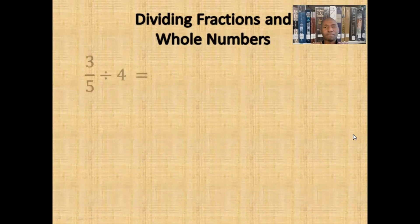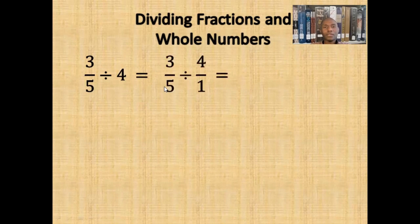Now, let's try some more problems. Suppose we have 3 fifths divided by 4. If we turn 4 into a fraction, we get 3 fifths divided by 4 wholes. If we use keep change flip, we get 3 fifths times 1 fourth. And if we multiply these fractions together, we get 3 twentieths.